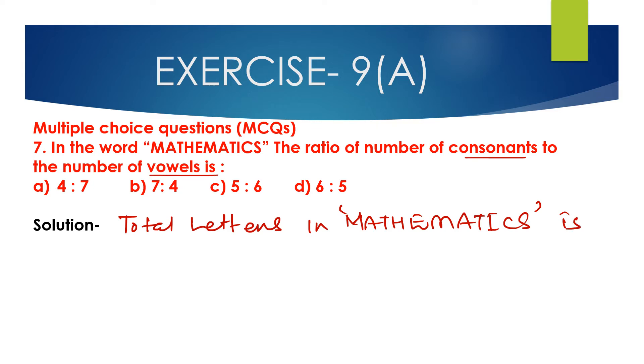Total letters: 1, 2, 3, 4, 5, 6, 7, 8, 9, 10, 11. So there are 11 letters total. Number of consonants - consonants are...